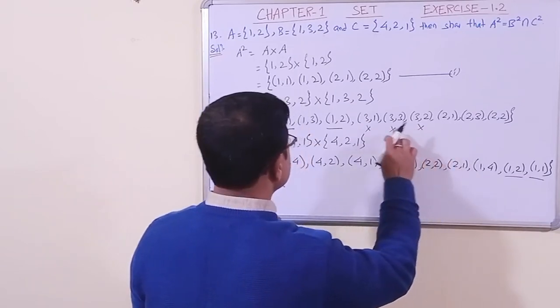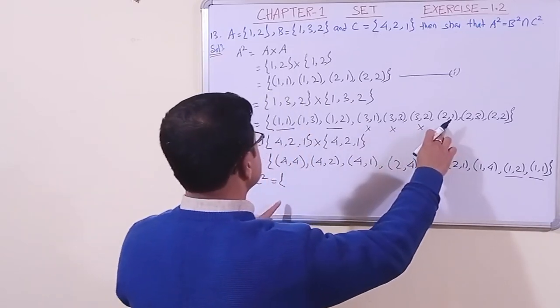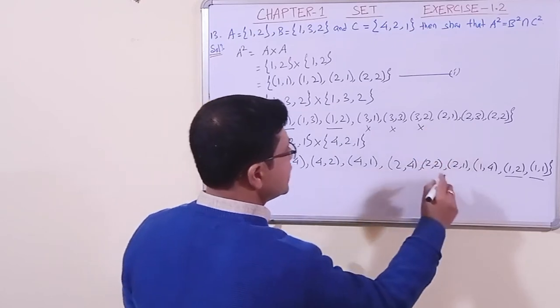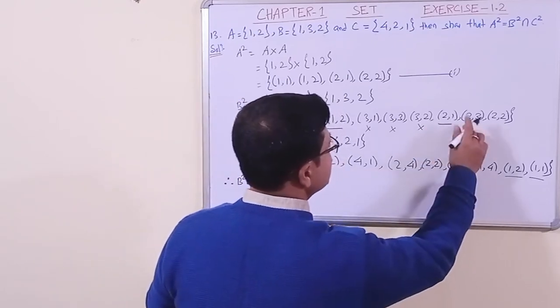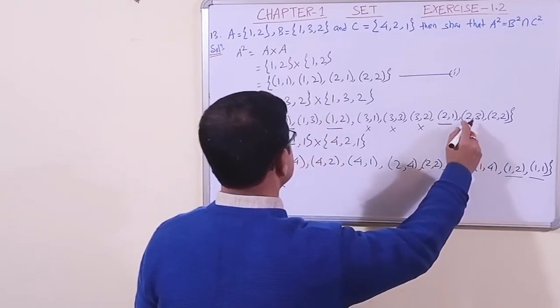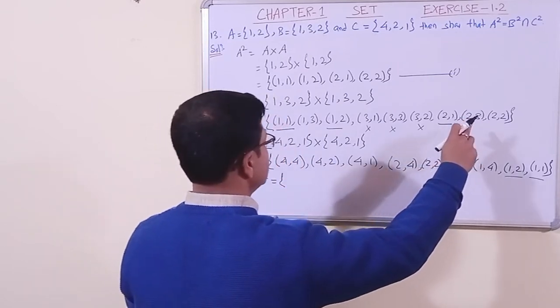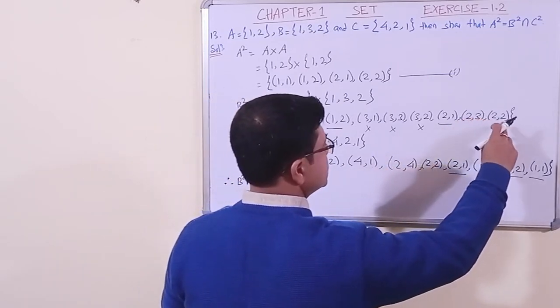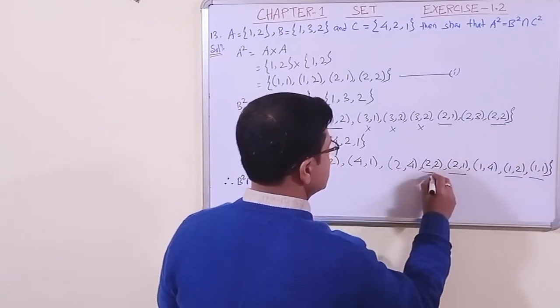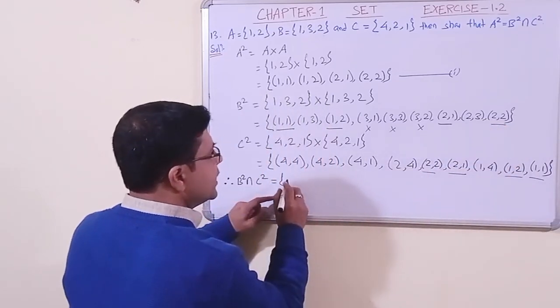Then (2,1), we will get, yes, (2,1) we have got. Then (2,3), this is not there, obviously. Then (2,2), this (2,2) we have obtained. So let us write the elements, the common elements: (1,1), (1,2), (2,1), (2,2). In this way we have framed B square intersection C square. So this is equation 2.